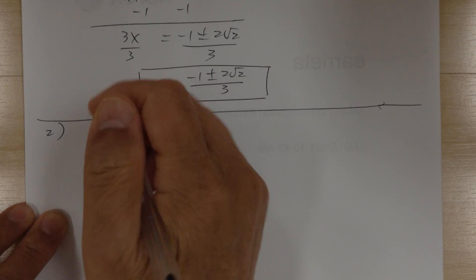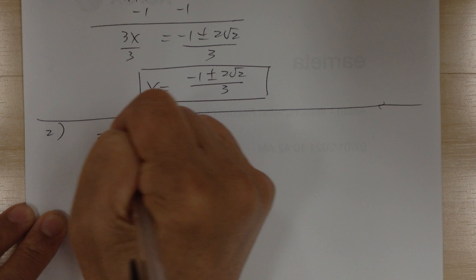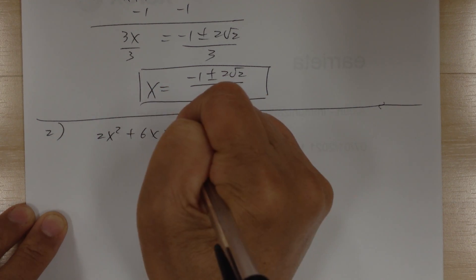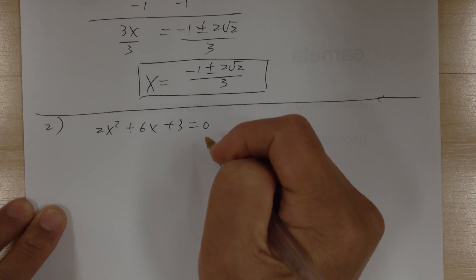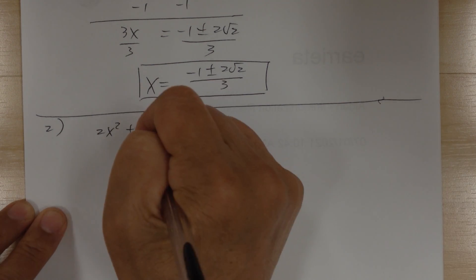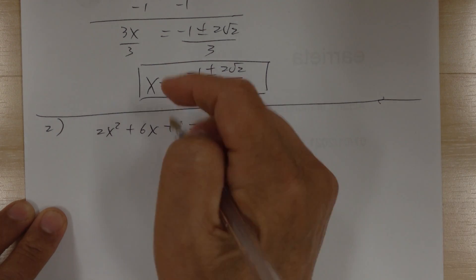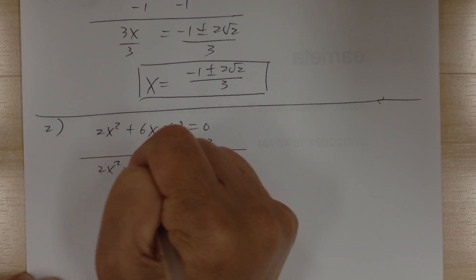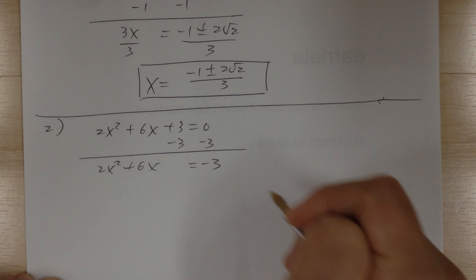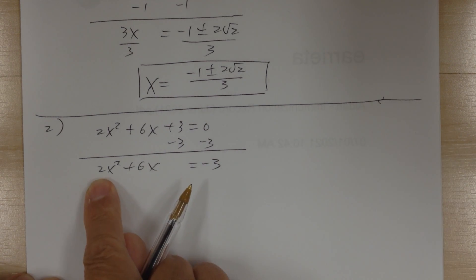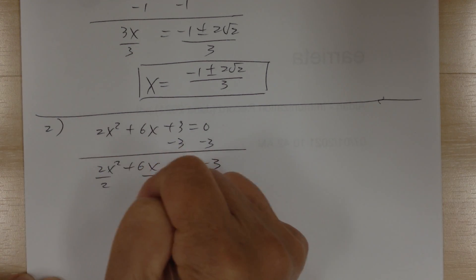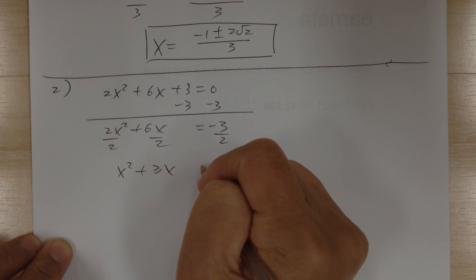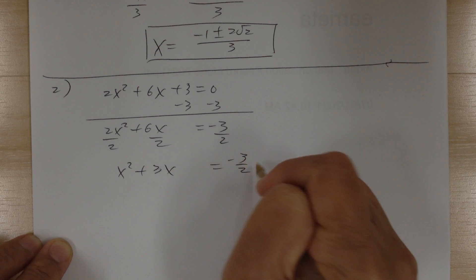Number 2. You have 2x² + 6x + 3 = 0, and you want to solve by completing the square. First, get rid of the constant: minus 3 on both sides, giving 2x² + 6x = −3. Then divide by 2 to get x² + 3x = −3/2.